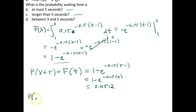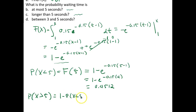In notation, P(X greater than 5) equals 1 minus P(X less than 5), which equals 1 minus F(5).